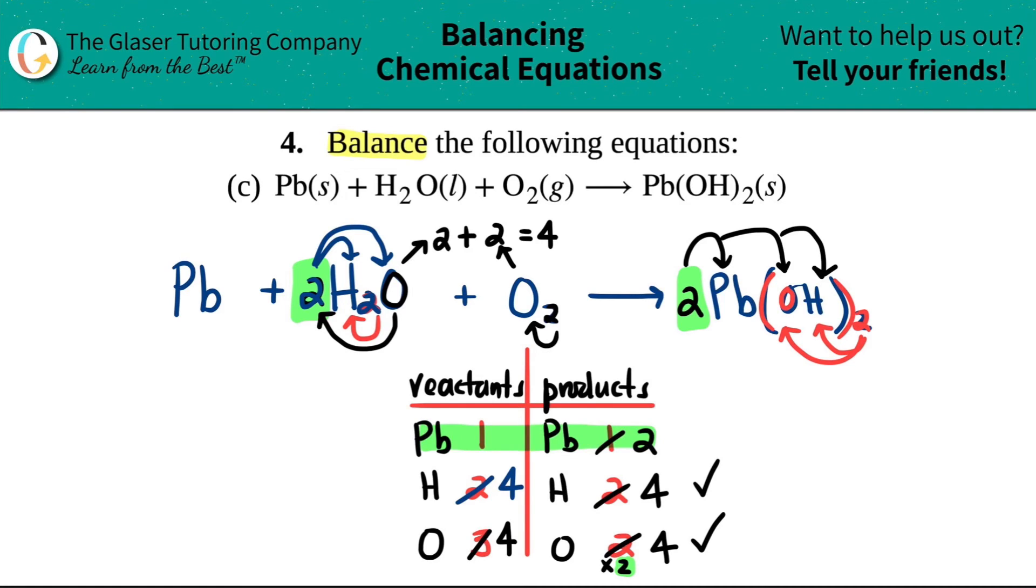But let's see. Can I multiply one by any number to get to two? Yeah, I can—one times two. That number goes in front, always the coefficient of what you're trying to multiply. So there should be a two here. And now you have two leads and now everything is balanced. So for this one you had two leads plus two H2Os plus one O2—whenever there's no coefficient in front it's always a one—and that will always give you two Pb(OH)2s.